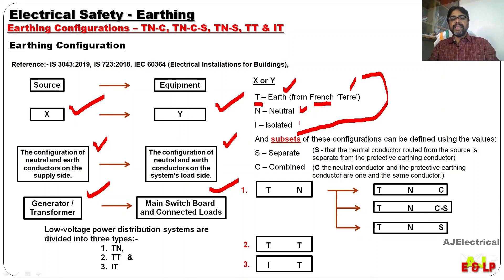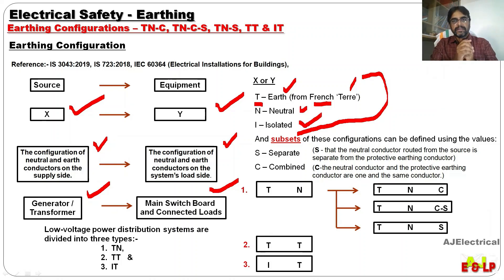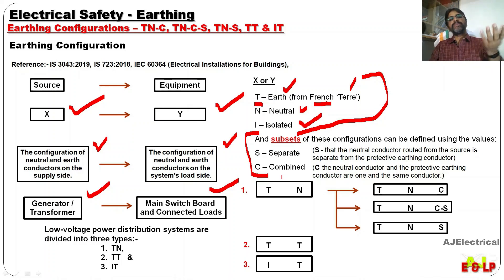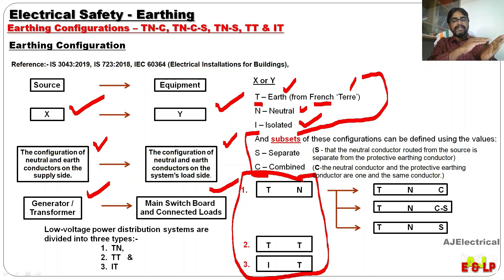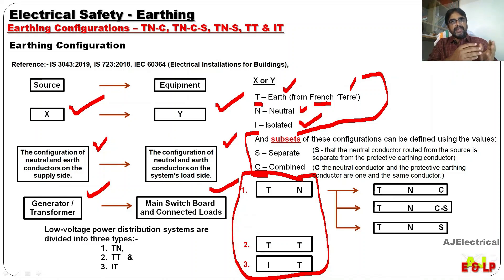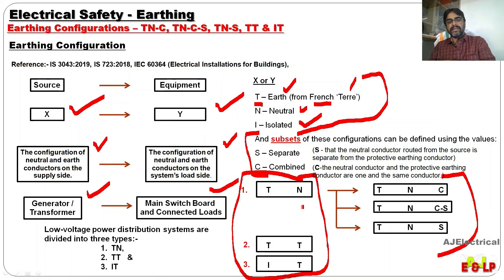N means neutral. S means separate and C means combined — these are subset notations. The basic earthing configurations are: TN system where the source side is T and the load side is N. The TN system is further divided into TNC, TNCS, and TNS — describing how the neutral and earth conductor come from source to load. Other than TN system, there is TT and IT. We will study each in detail in subsequent videos.